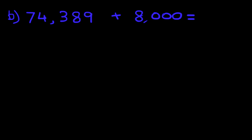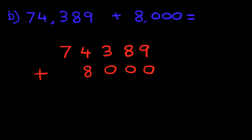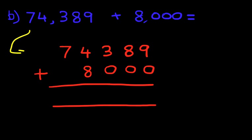74,389 plus 8,000. So let's begin by writing this question in columns. We have 74,389 plus 8,000. And note how the 8 goes below number 4, because both of them are thousands. So we have rewritten the question from the horizontal format to the vertical format.